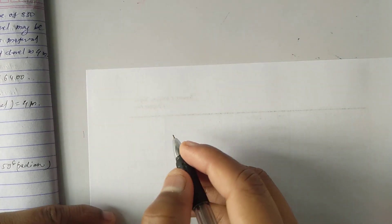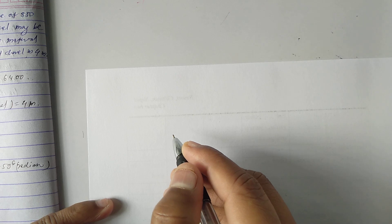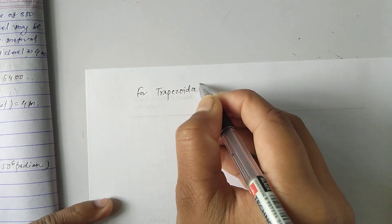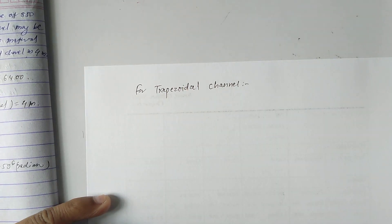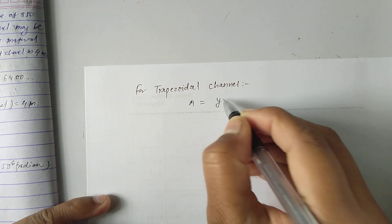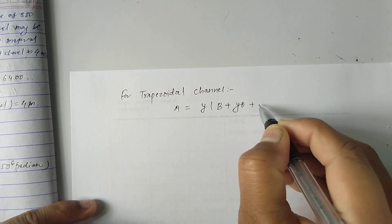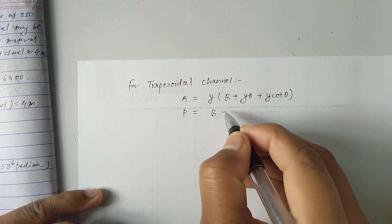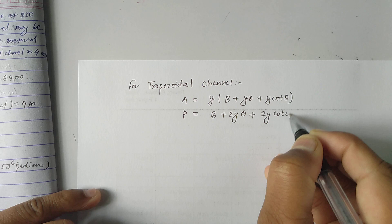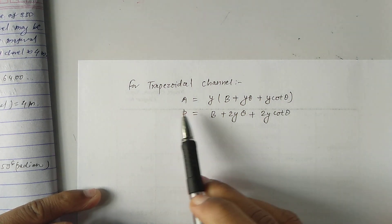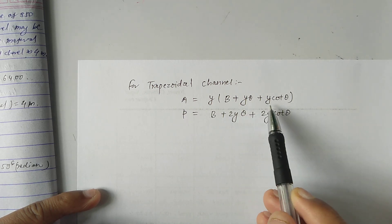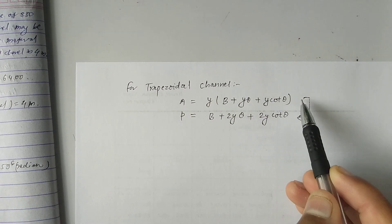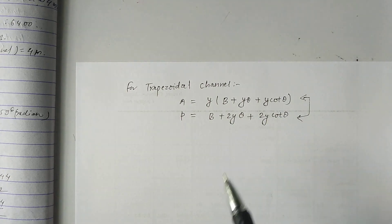For a lined concrete channel, we generally provide a trapezoidal channel. For a trapezoidal channel, the area A = y(b + y·tanθ + y·cotθ), and the wetted perimeter P = b + 2y·tanθ + 2y·cotθ. These are the basic formulas for the trapezoidal channel that we are going to use in this numerical.